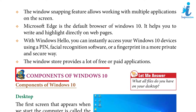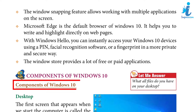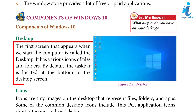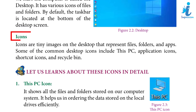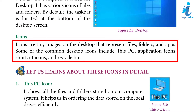Components of Windows 10 — Desktop: The first screen that appears when we start the computer is called the desktop. It has various icons of files and folders. By default, the taskbar is located at the bottom of the desktop screen. Icons are tiny images on the desktop that represent files, folders, and apps.